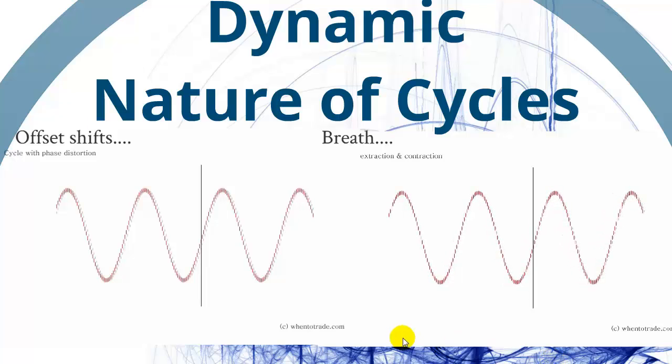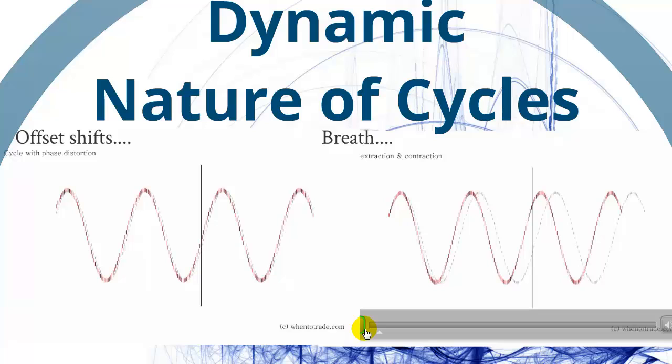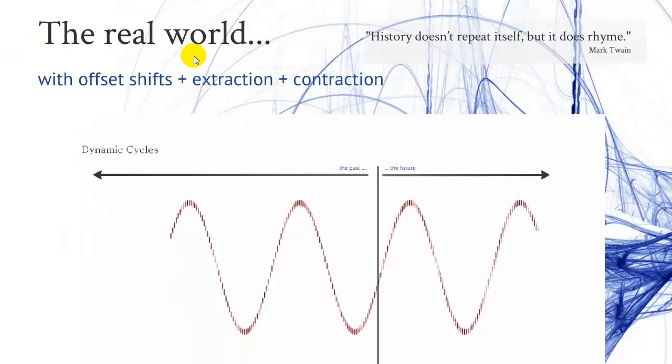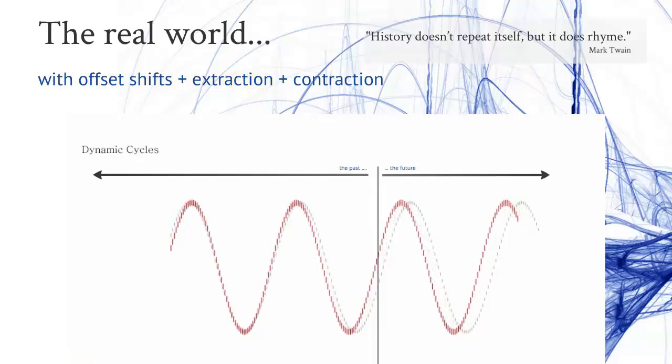So what we do next is we will put both effects on the chart. In the real world, for sure you will see both effects. We have offset shifts, extraction and contraction during the same time, and this is what this animation shows you.